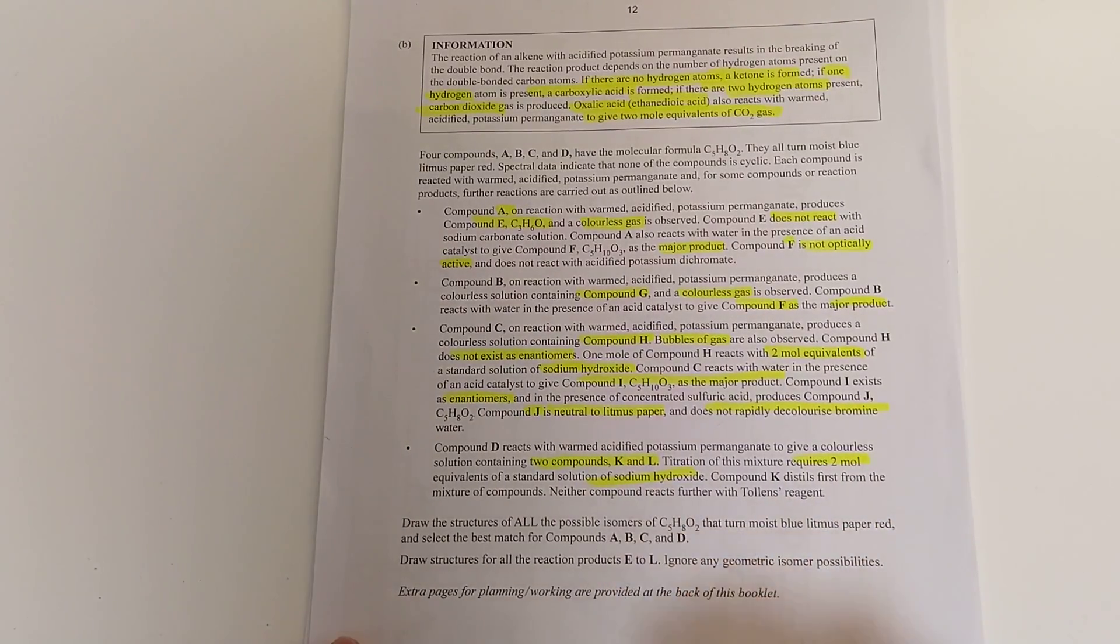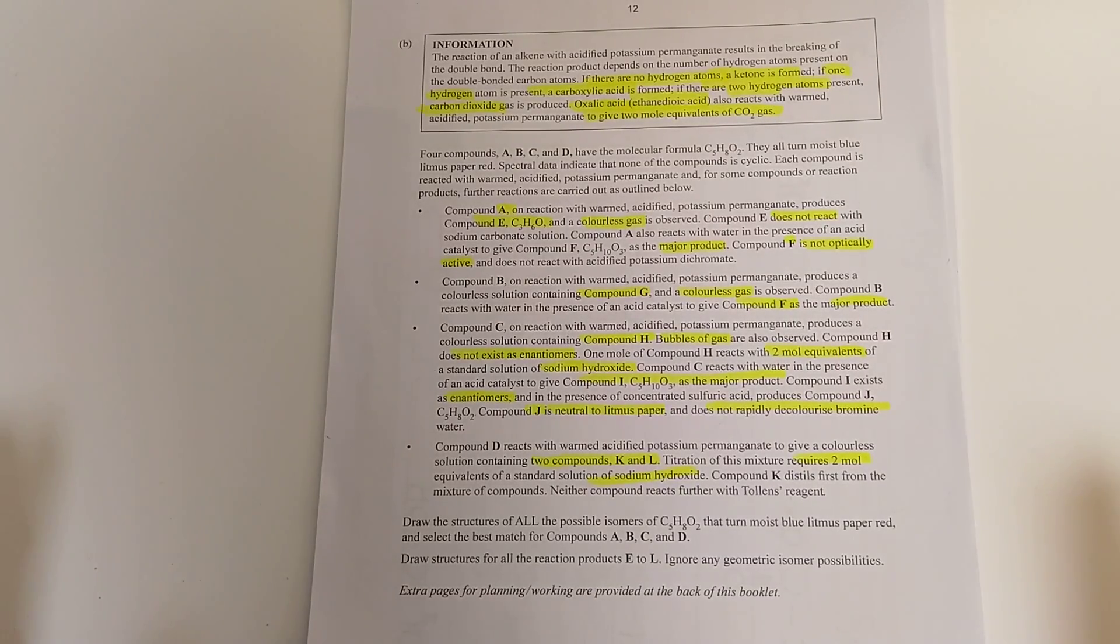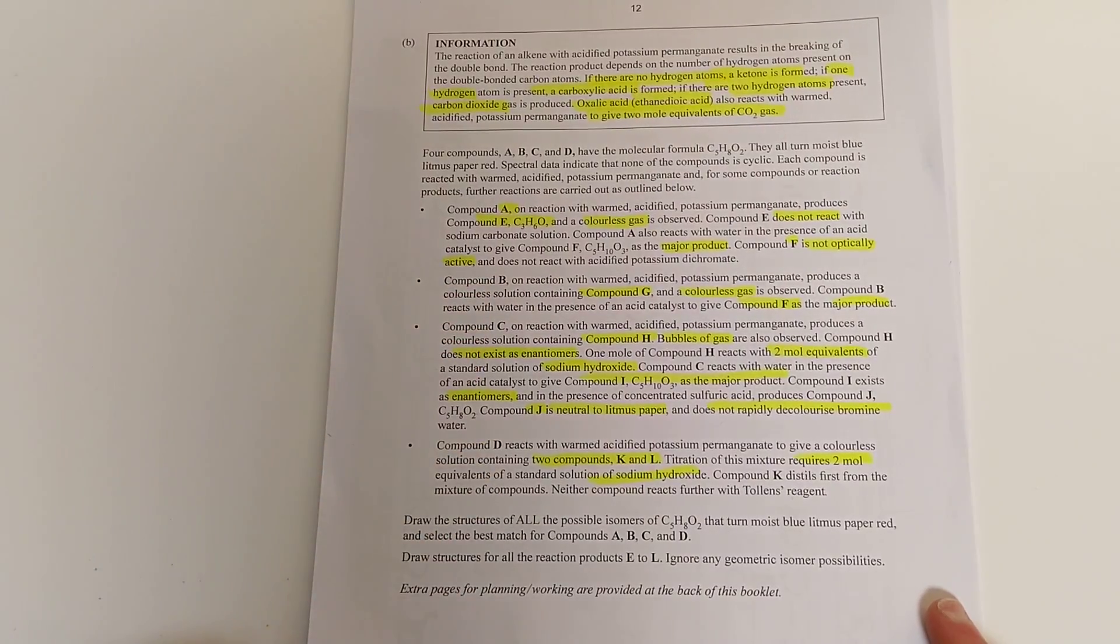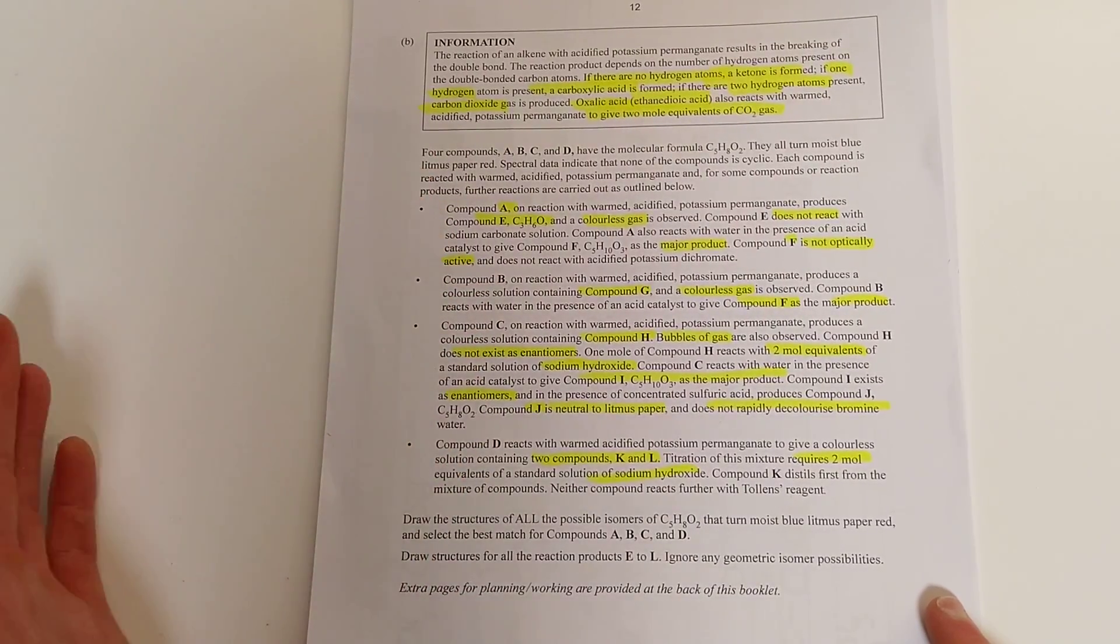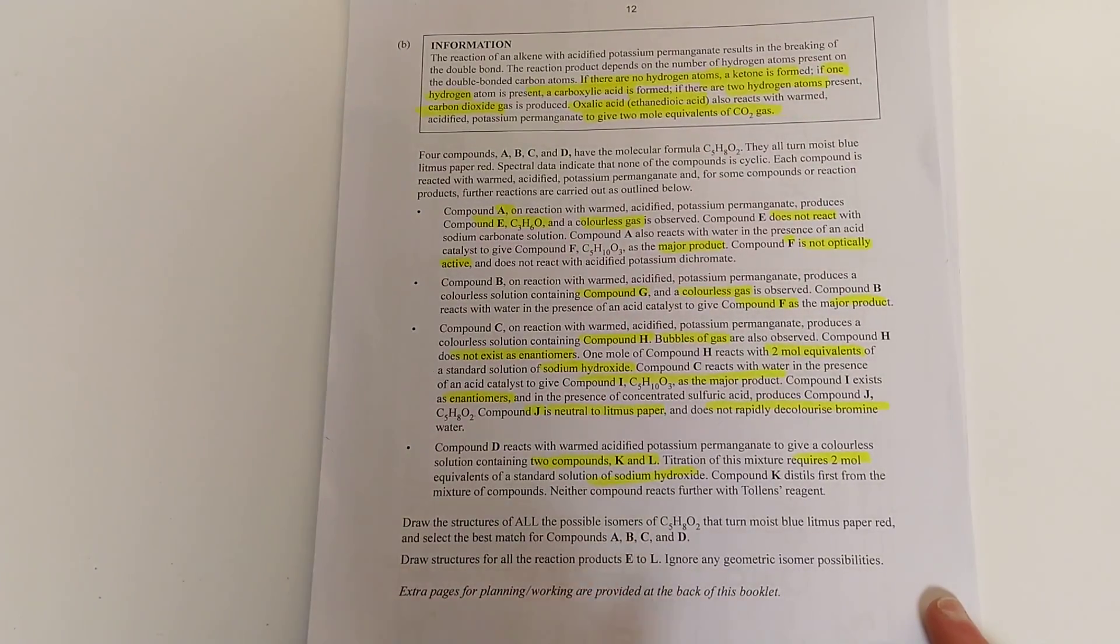Furthermore, your structures will only match this formula if they contain a carbon-carbon double bond. From this list of structures, we need to find the ones that match the descriptions of compounds A, B, C, and D. And these compounds A through D undergo further reactions to produce other structures we'll need to draw out. Those are compounds E through L.